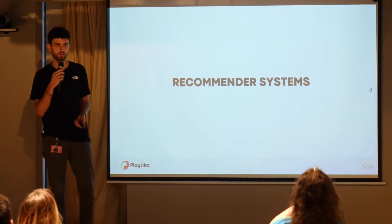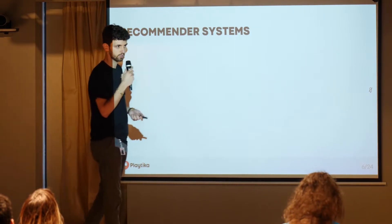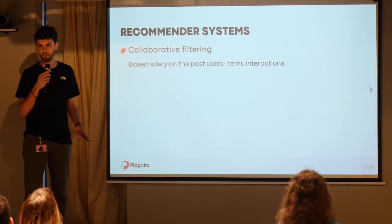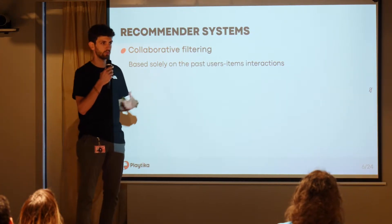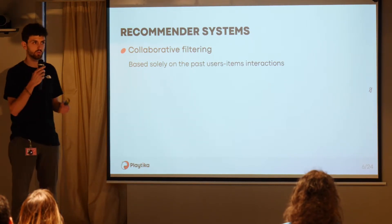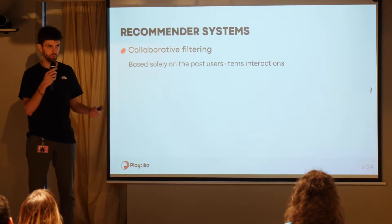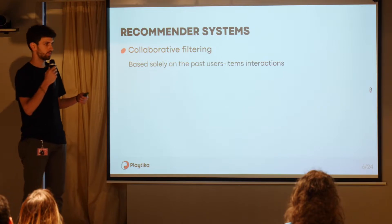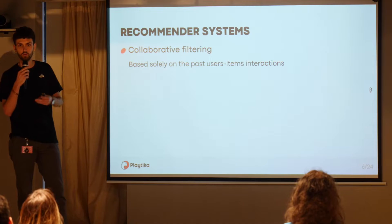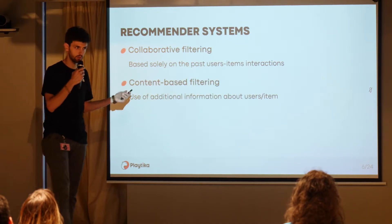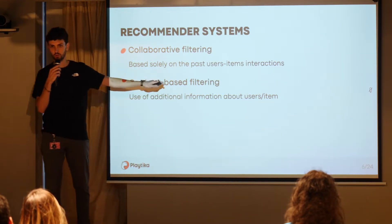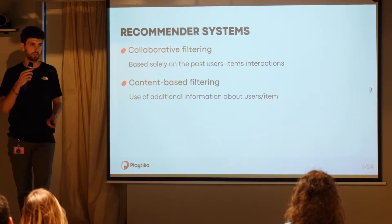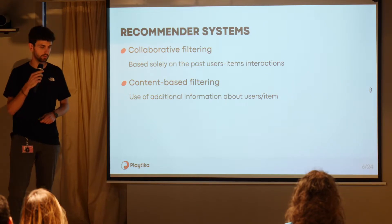Even if we don't know it, we use recommender systems all the time. Collaborative filtering suffers from the cold start problem: if there is a new user with no history, you can't recommend anything. The solution is content-based filtering, where you use additional information about the user and the item — such as age and country — to recommend items.